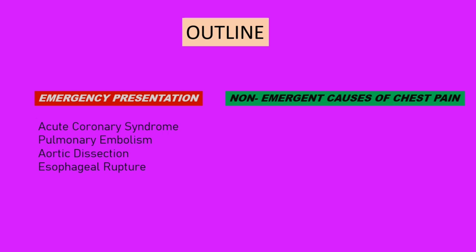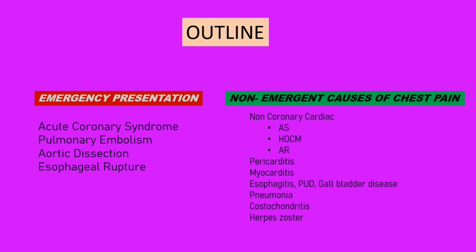Sudden onset of severe chest pain or back pain associated with limb pulse differential suggests aortic dissection, but the sensitivity of this finding alone is only 30 percent. PE, or pulmonary embolism, may result in tachycardia, dyspnea, and accentuated P2. Non-coronary causes of chest pain include aortic stenosis, aortic regurgitation, and hypertrophic cardiomyopathy, which produce characteristic murmurs and pulse alterations.